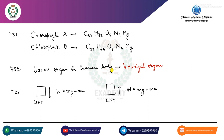तो देखो यहां पर — Chlorophyll A और Chlorophyll B में Carbon कितना होता है? C55 होता है। C55 दोनों में ही है। फिर N4, Mg दोनों में ही है। लेकिन H — जो Chlorophyll A में होता है, H72, O5 — और Chlorophyll B में होता है, H70, O6.